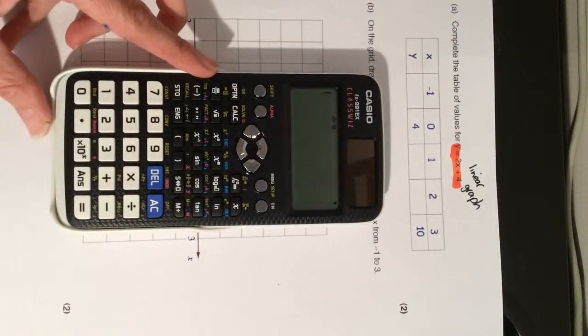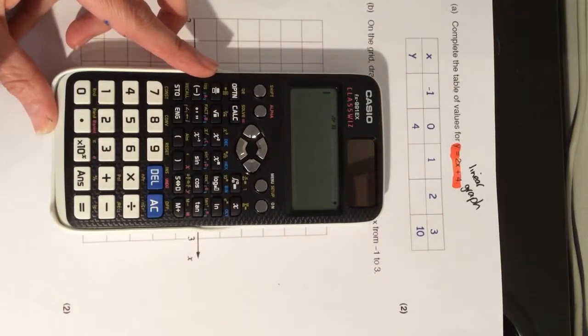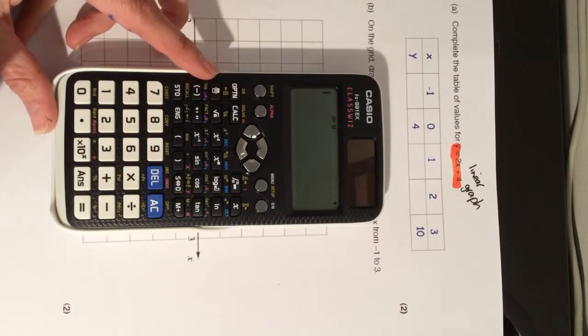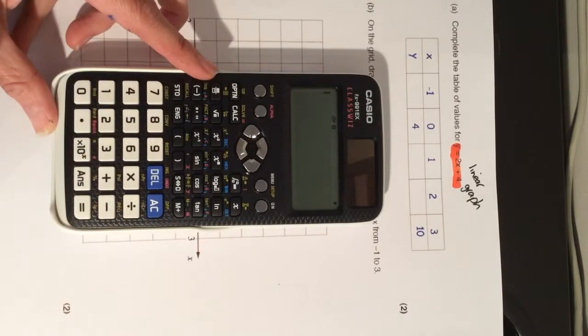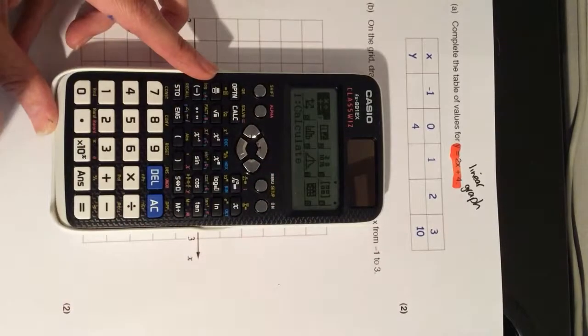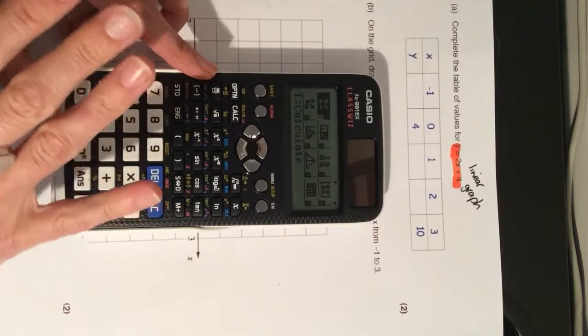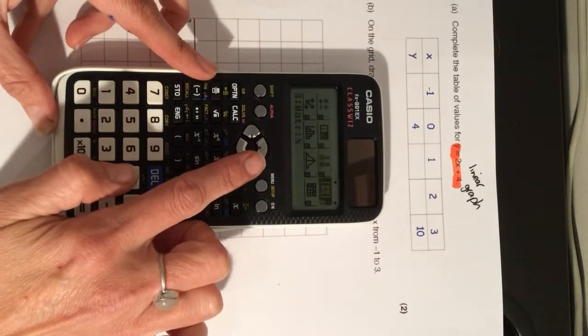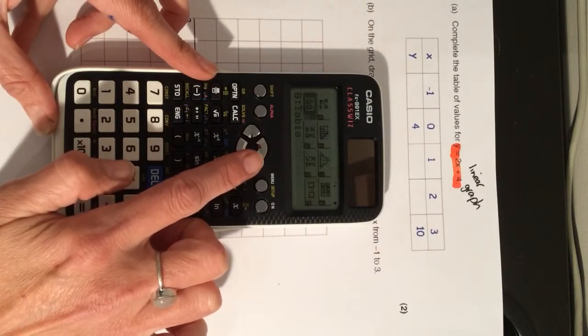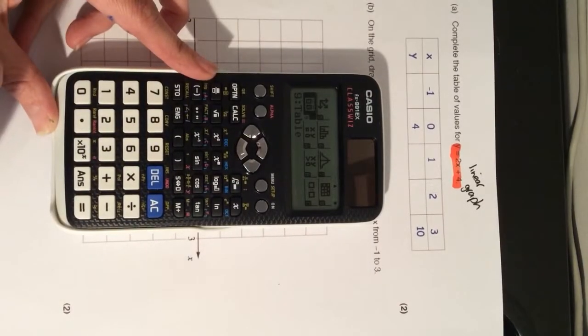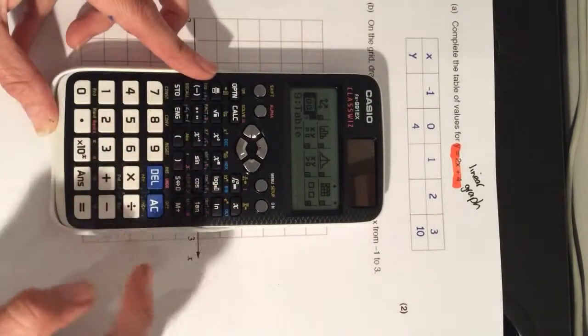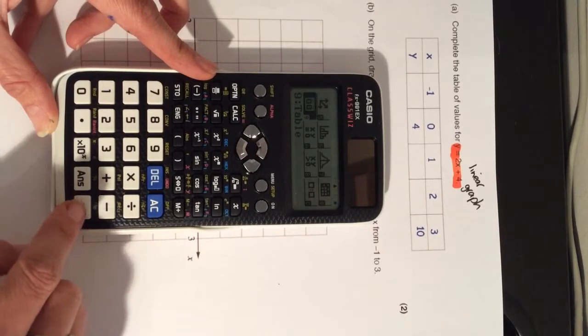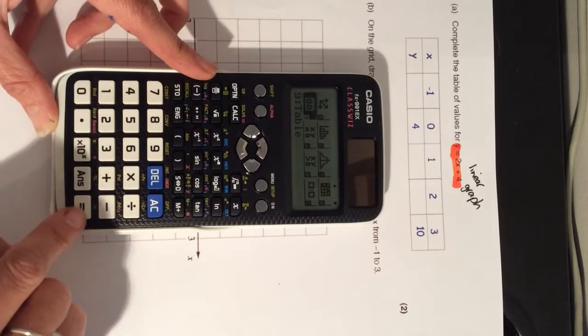If you have one of these ClassWiz calculators, they're really good to help you doing various different functions. One of the functions you can do is you can fill in a table of values which is perfect for what we need. If you press the menu button, it might differ depending on what type of ClassWiz calculator you have. I'm going to arrow across until I get to mine's menu number 9 and it's called the table function. When I get to the table, I'm going to press equals.